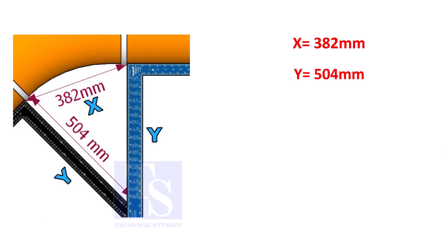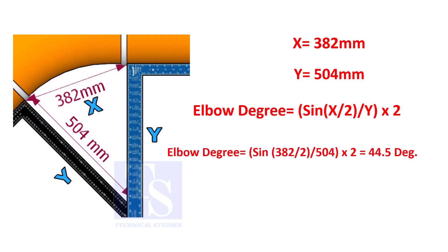Assume that the value of X is 382 and the value of Y is 504. Divide the half value of 382 by 504 and convert the value to sine. Then multiply by 2.